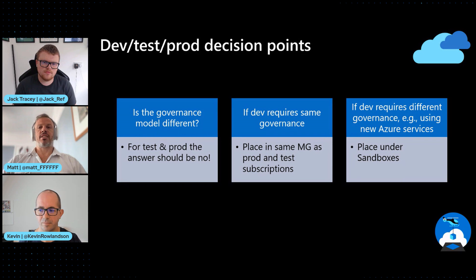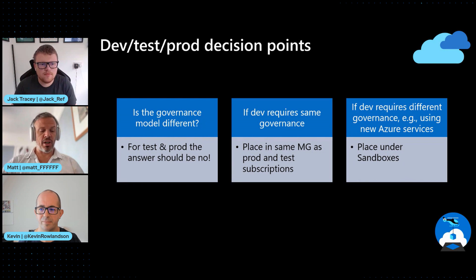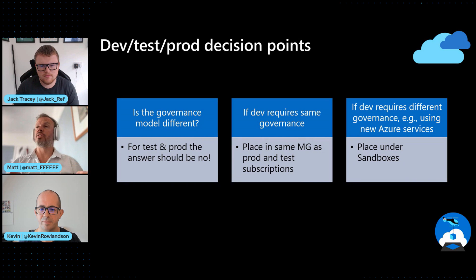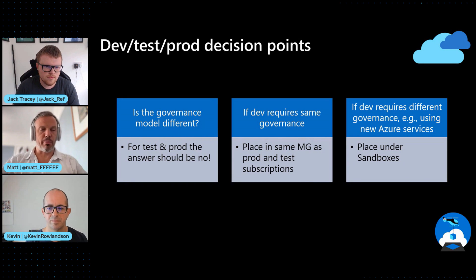First and foremost, I think you should ask yourself what the governance model is of that application. Will it fit under one of my existing archetypes? If the answer is yes, then put it under that archetype. If production has the same governance model as DevTest, then put them all together. There's no reason to create different management groups there.